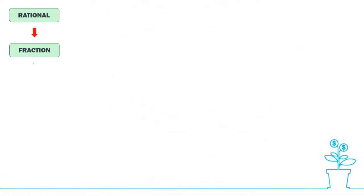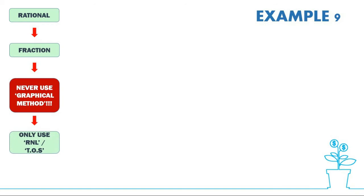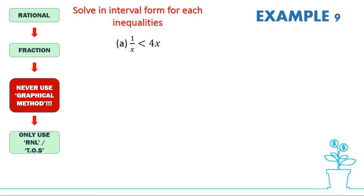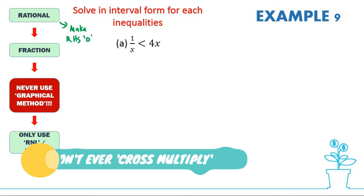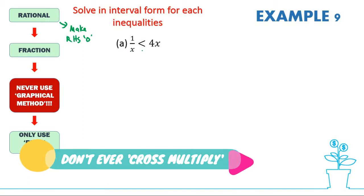Let's look into rational inequalities. Since it is a fraction, never use the graphical method — only use the real number line method or table of signs. The first tip for rational inequalities: you should always make your right-hand side zero. You cannot cross multiply because you don't know what x is — if x is negative, the sign could change.